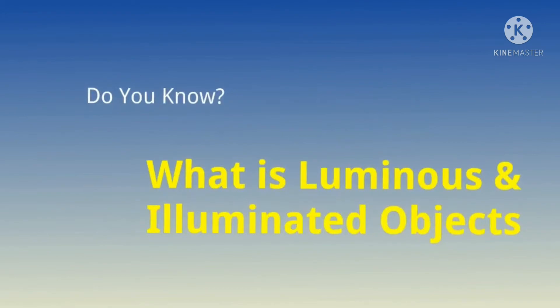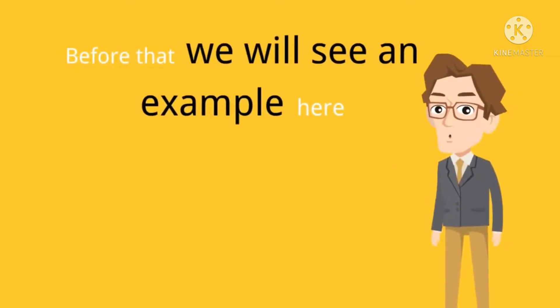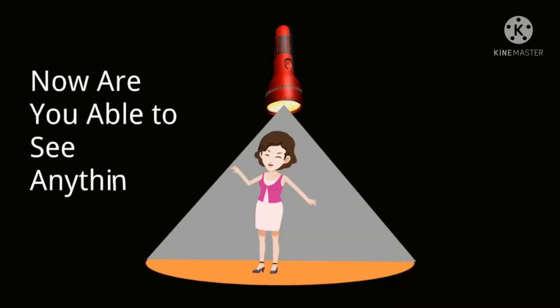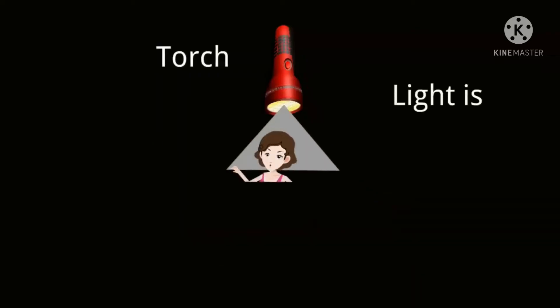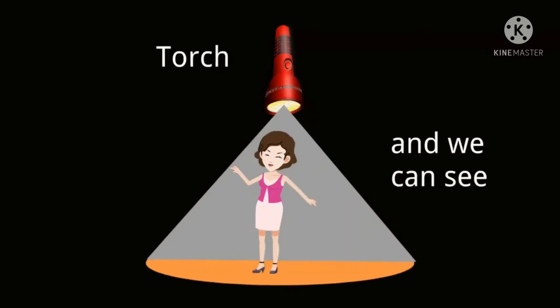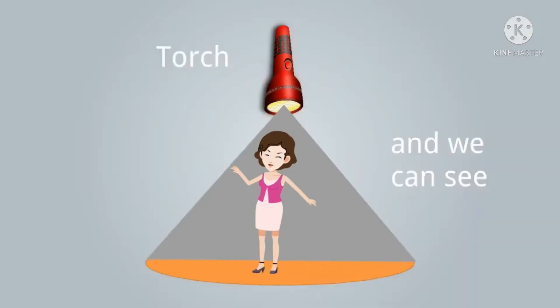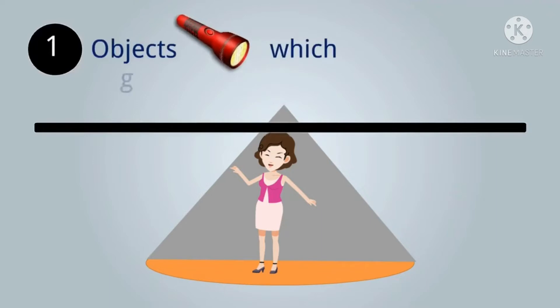Do you know what luminous and illuminated objects are? Before that, we will see an example. This is a very dark space. Are you able to see anything here? No. Because there is a torchlight and light is falling on the girl, and we are able to see the girl.